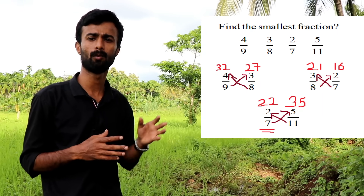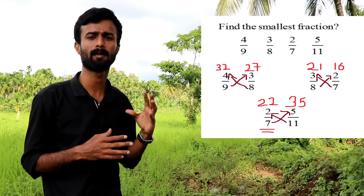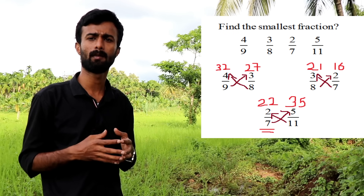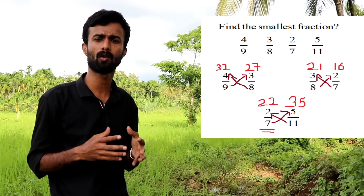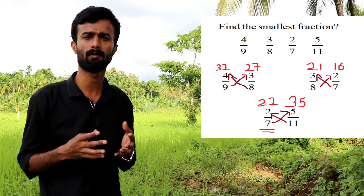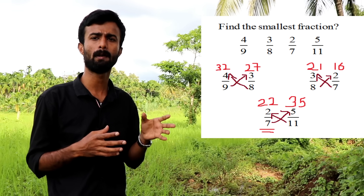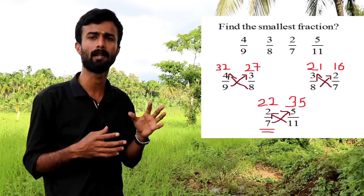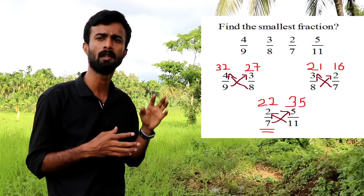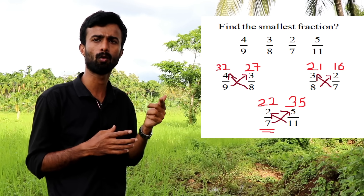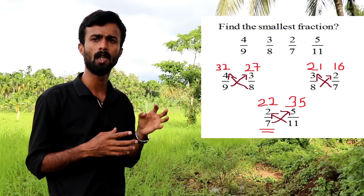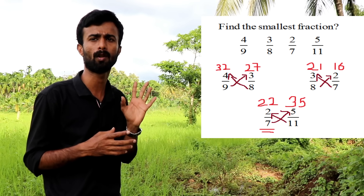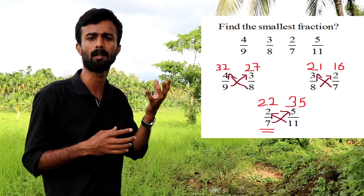Now find the smallest fraction. Cross multiply 4/9 and 3/8: 4×8 = 32 and 3×9 = 27. So 4/9 gives 32 and 3/8 gives 27. The smallest number is 3/8. Remember, the number is 2/7. Small number is 27, so 3/8 is the smallest fraction.